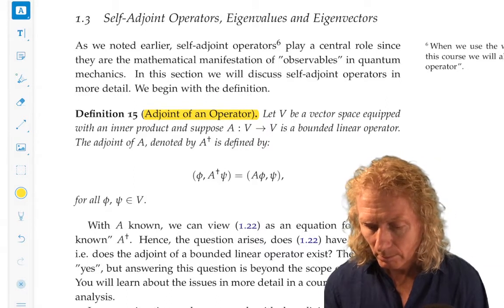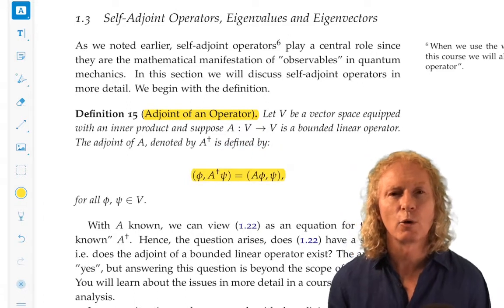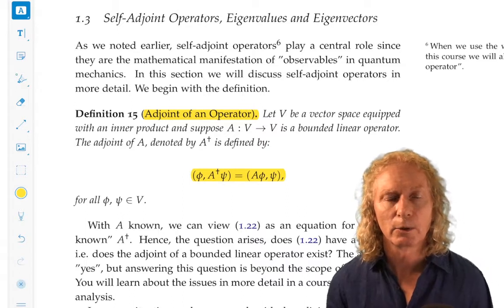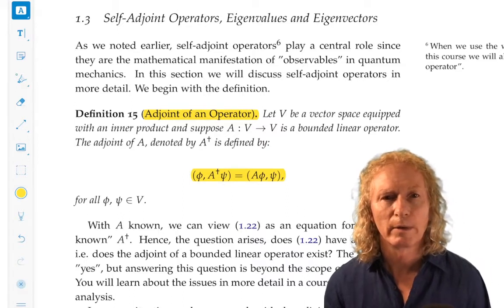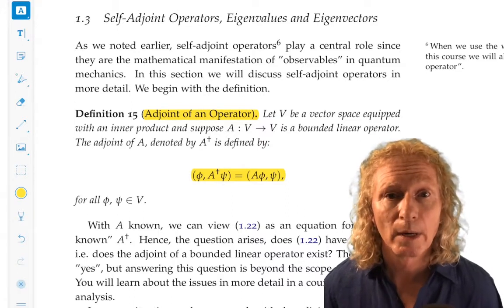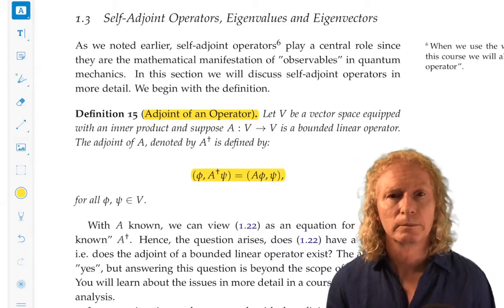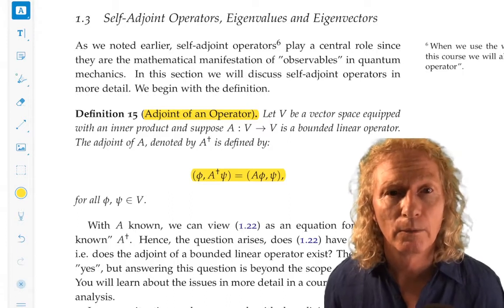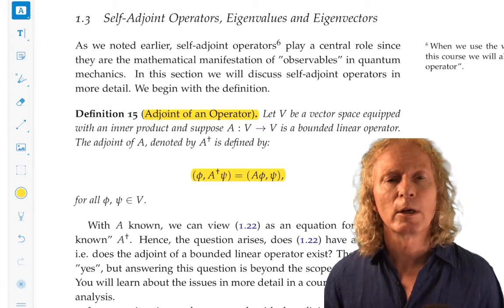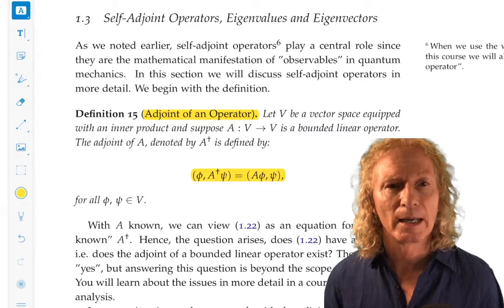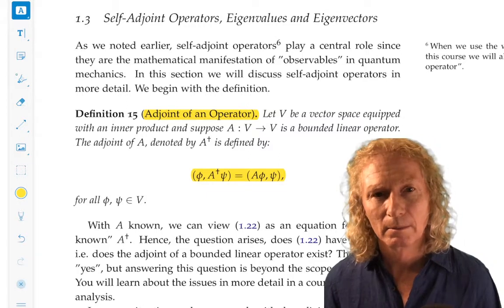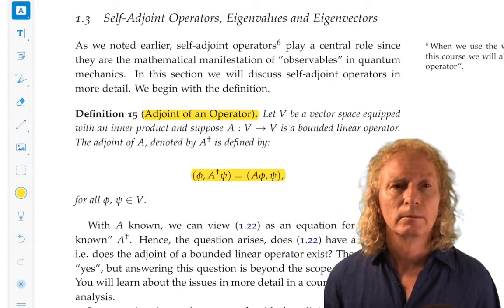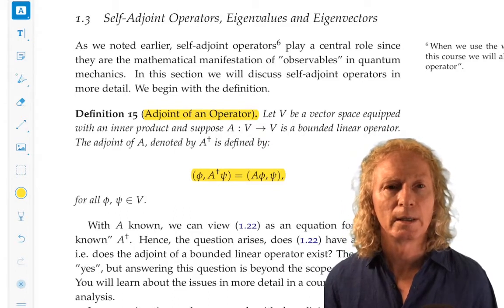You can view this as an equation for the adjoint. It's an equation in terms of the inner product. So, look at the right hand side first. We have the inner product of A phi with psi, and that's equal to the inner product of phi with this operator we call A dagger psi, and that is the adjoint.